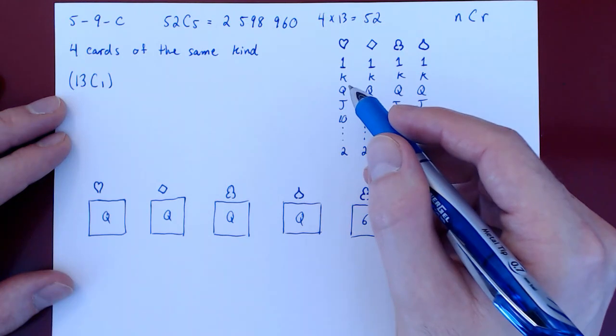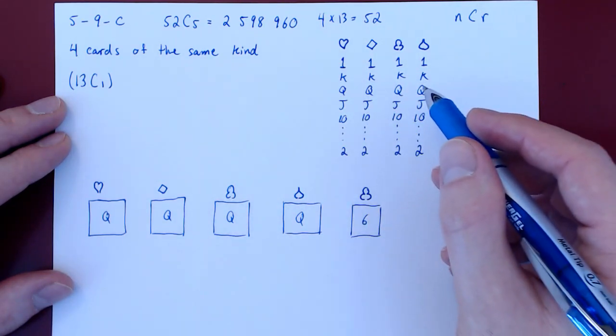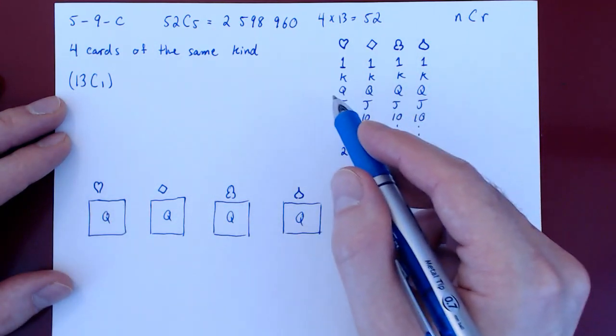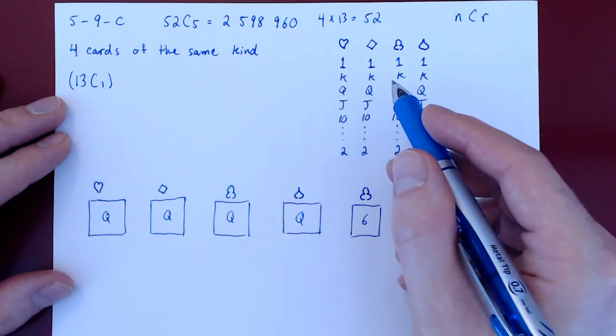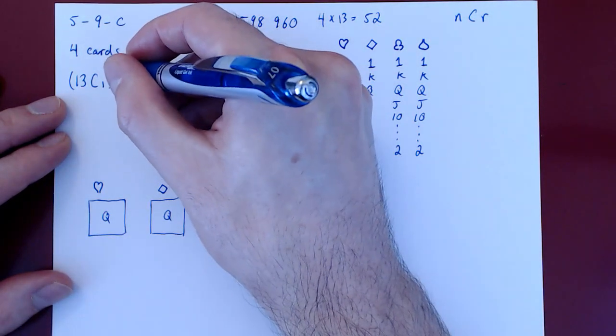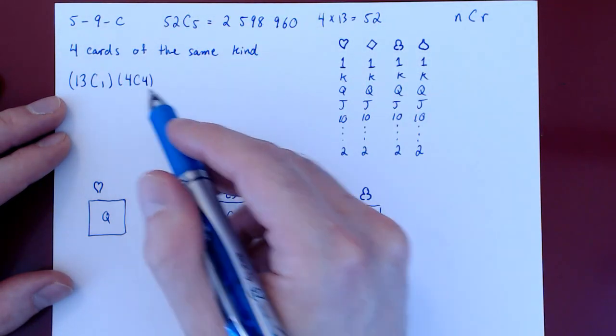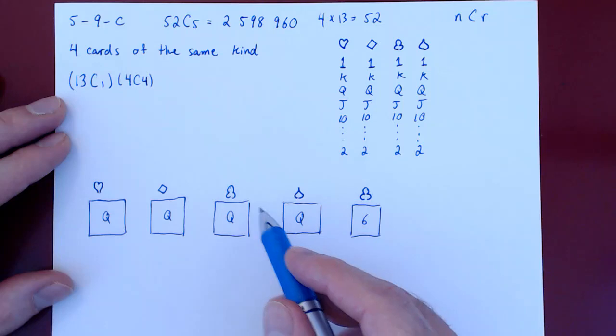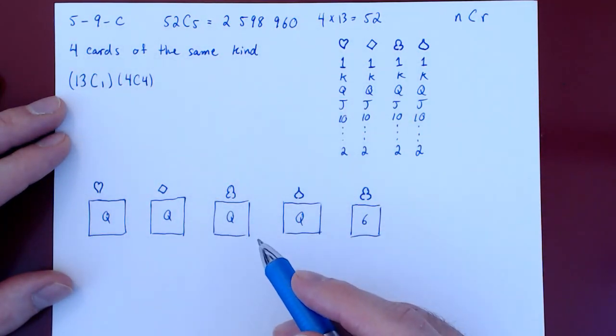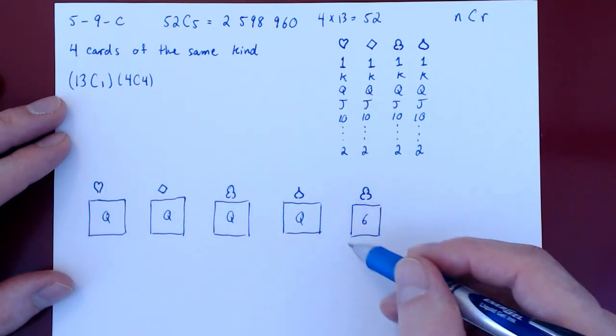And now we have to choose the corresponding cards from the kind. Say we've chosen queens. Well, how many of the queens are we choosing? Out of the 4 queens available, since we want a quadruple, we are choosing all 4 of them. So of course, this is 4 choose 4. Out of the 4 queens available, we choose all 4 of them, because we want a quadruple. Now we have our quadruple. We're missing the fifth card.